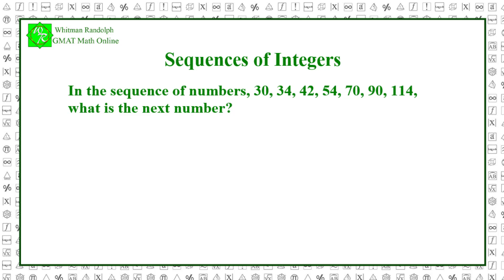In the sequence of numbers 30, 34, 42, 54, 70, 90, 114, what is the next number? Here are some possible answers. Let's find the solution.